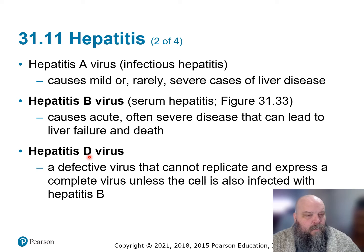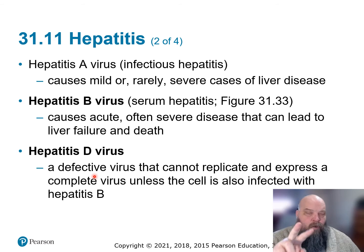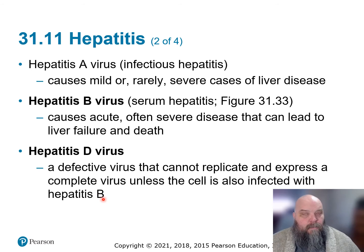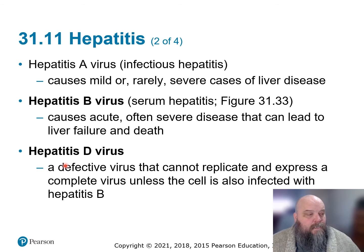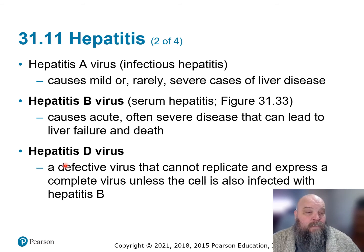Hepatitis D is called a defective virus because it can get in but it can't replicate. It has to be a co-infection in a cell already infected with B. B can be bad enough on its own, but D with B is much worse. If you're exposed to D alone, most of the time it can't do anything — it can infect but can't replicate, mature, or be released. So B is the one we worry about most, which is why there's a Hep B vaccine.